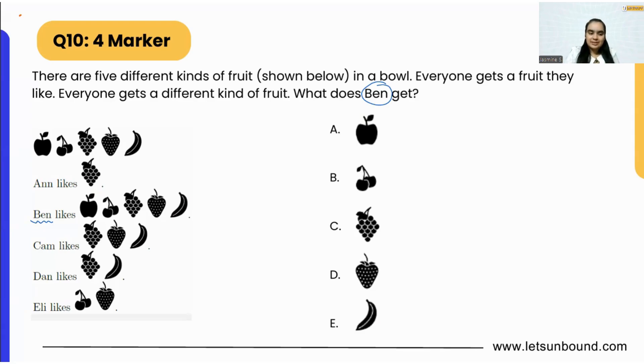For example, here I can see that Ann likes grapes, no other fruit, only one fruit which is grapes. So that means Ann is going to get grapes only. We can remove grapes from everywhere.